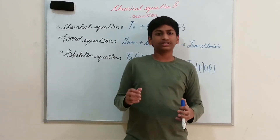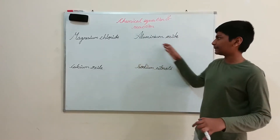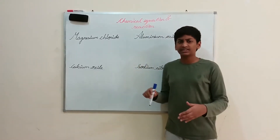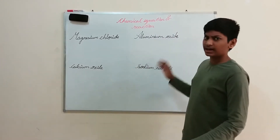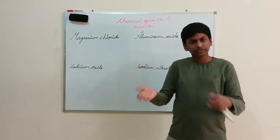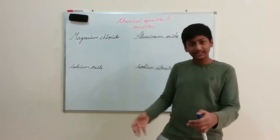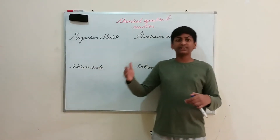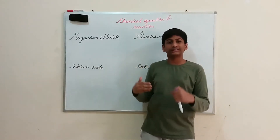Here we will find the chemical equation of some examples. As I told, when I give you 'iron chloride', you need to know how to write FeCl₃ or FeCl₂. How do I know which one? Here I have some examples: magnesium chloride, aluminium oxide, calcium oxide, and sodium nitrate. Note that nitrogen is written as 'nitrate' and it ends with 'te' instead of 'de'.